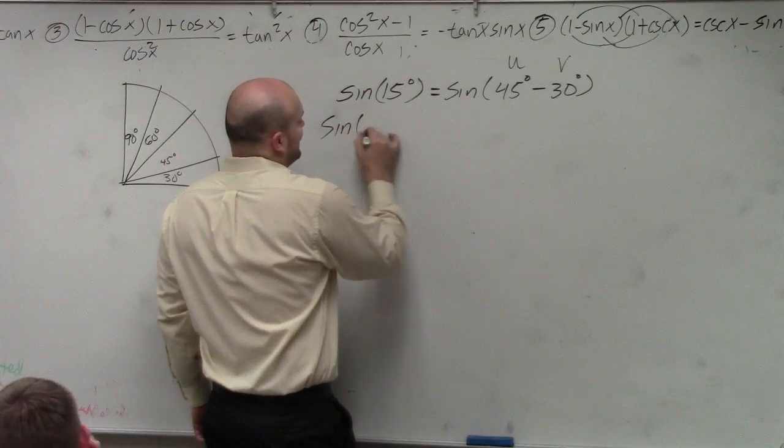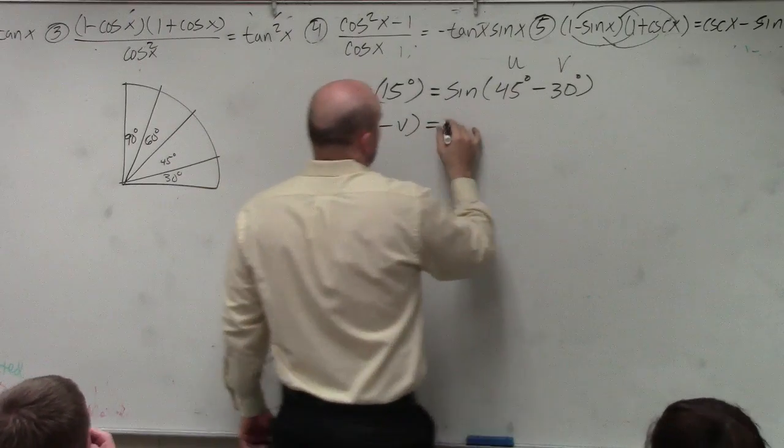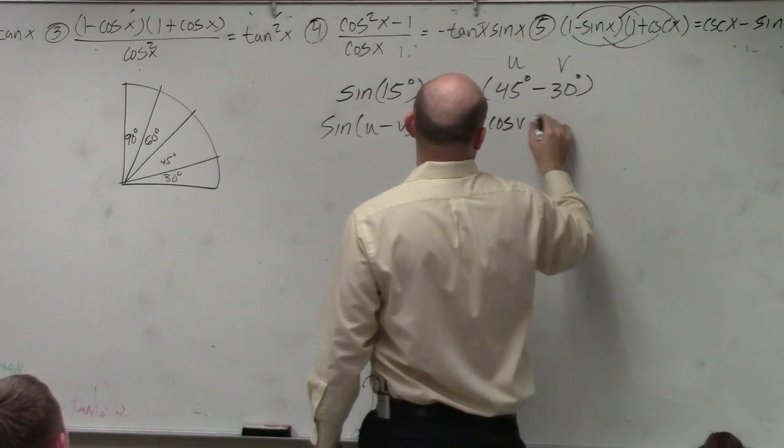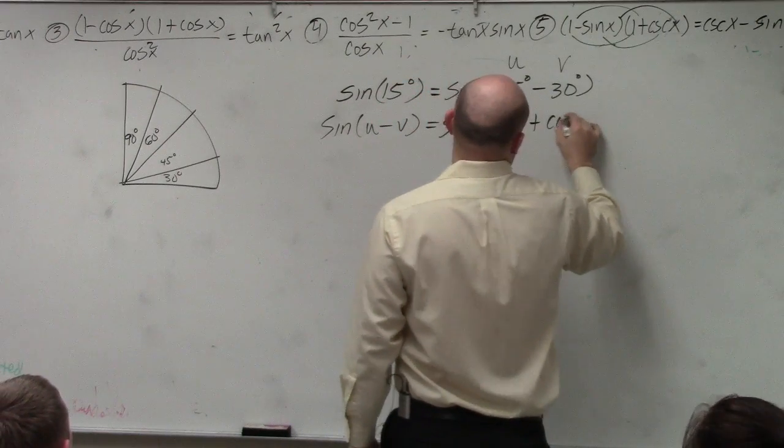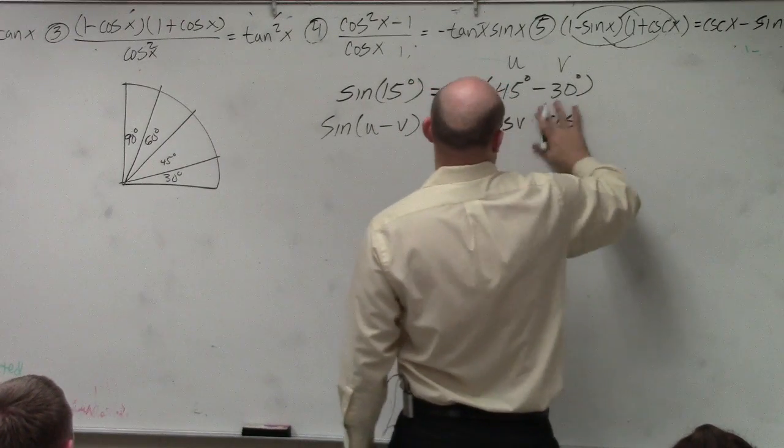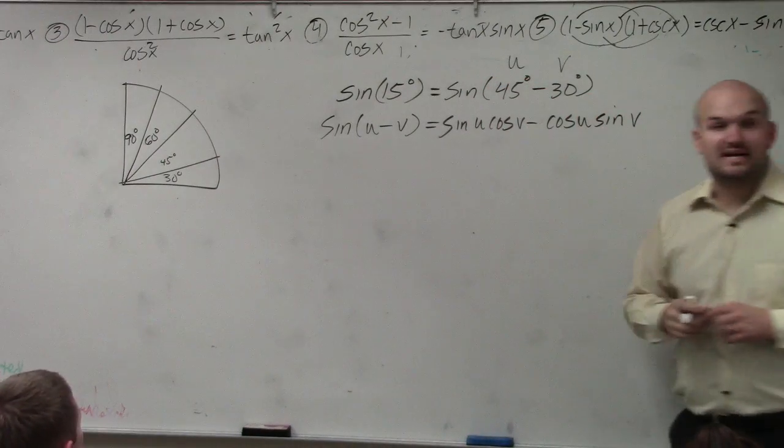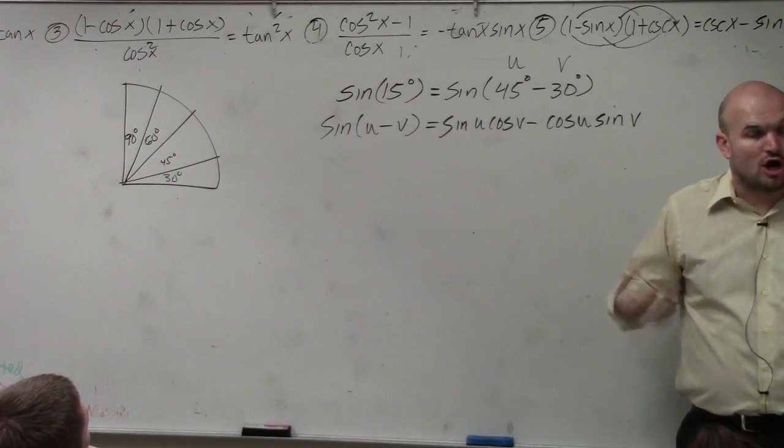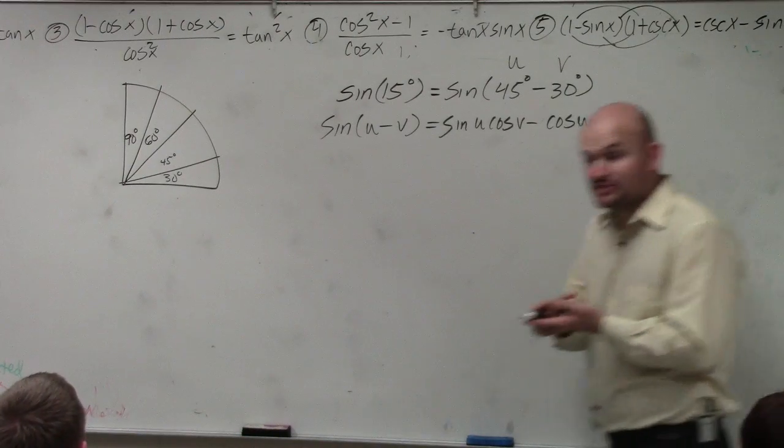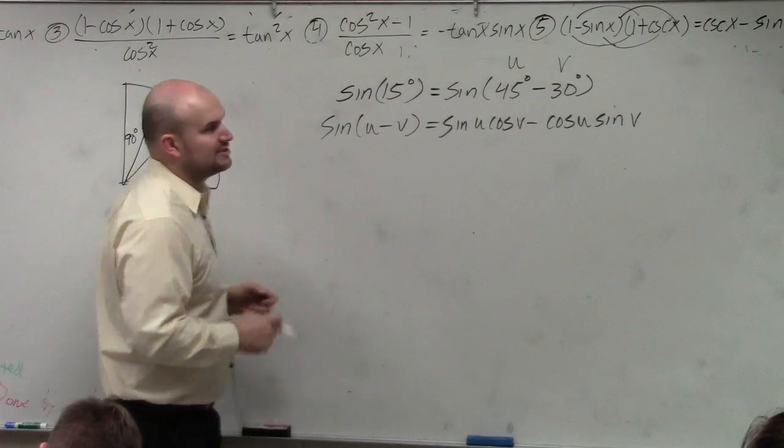So we have sine of u minus v equals sine of u times the cosine of v. No, wait. This is minus, right? Minus minus. Minus cosine of u times the sine of v. That's the formula. That's given to you. So the hardest part is, one, finding the formula that it's given to. And then two would be using the algebra, which we'll get to next.